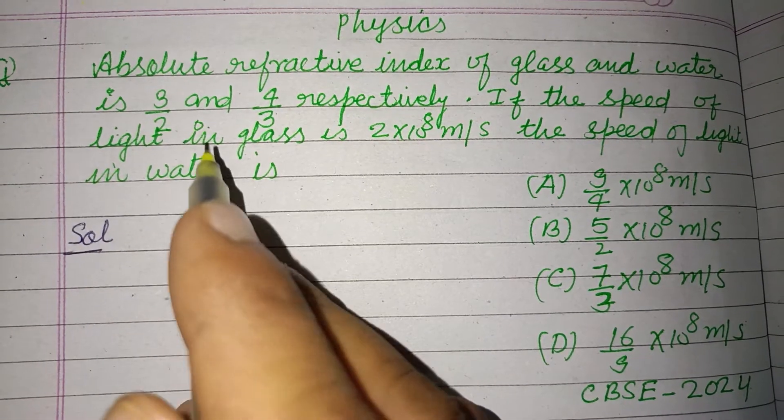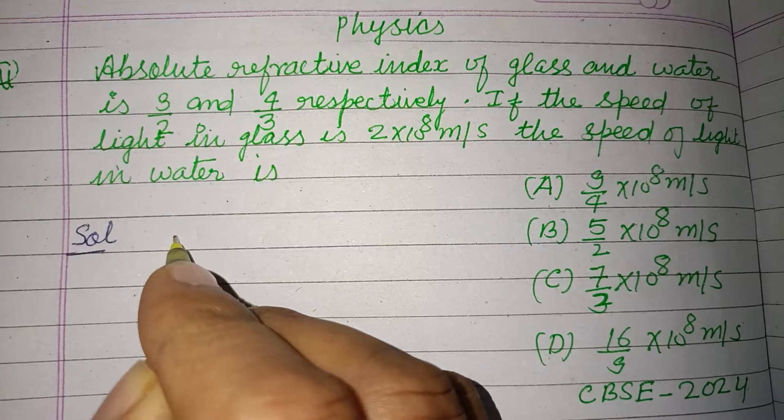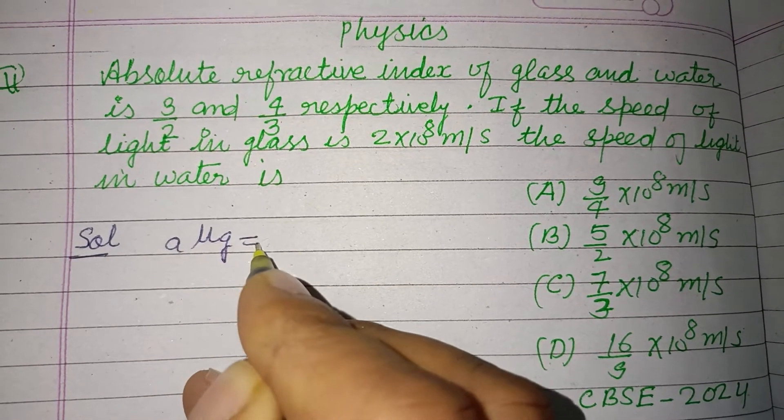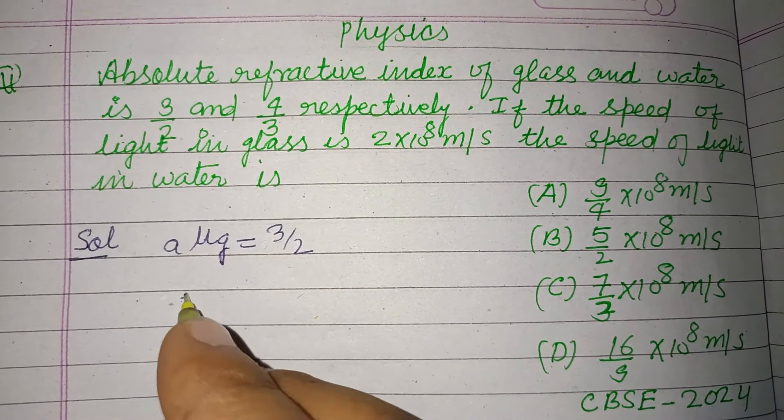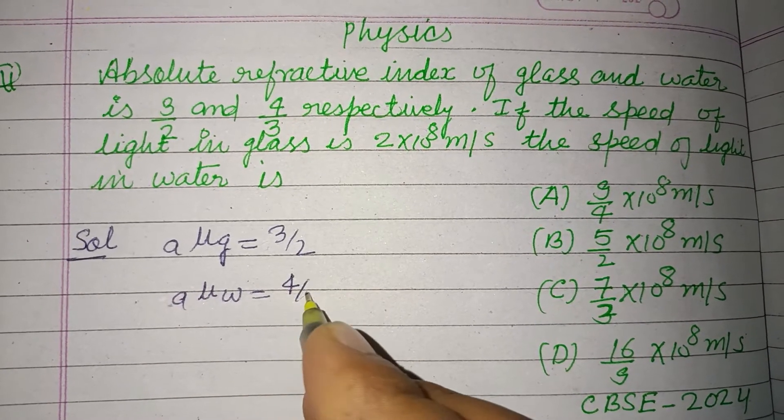So straight here, absolute refractive index of glass, a mu g is given 3 by 2, and a mu w is also given 4 by 3.